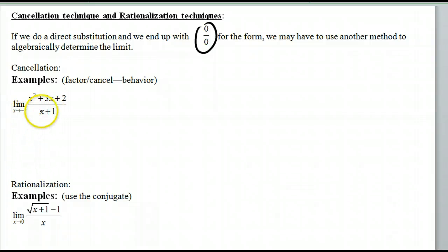If I look at this one, first of all, I plug in negative one. If I plug in negative one, I'm going to get zero over zero. So, this is my indeterminate form. When I see this indeterminate form, I'm going to have to try to resolve it, if possible.